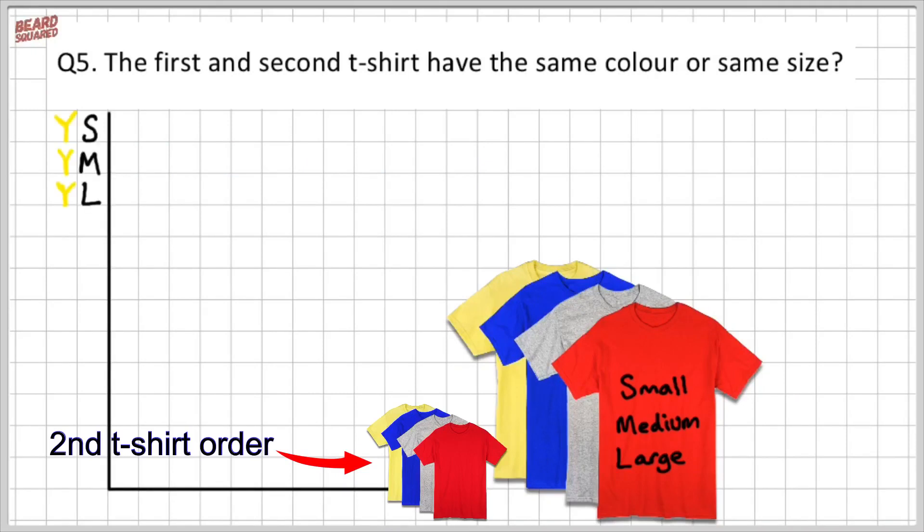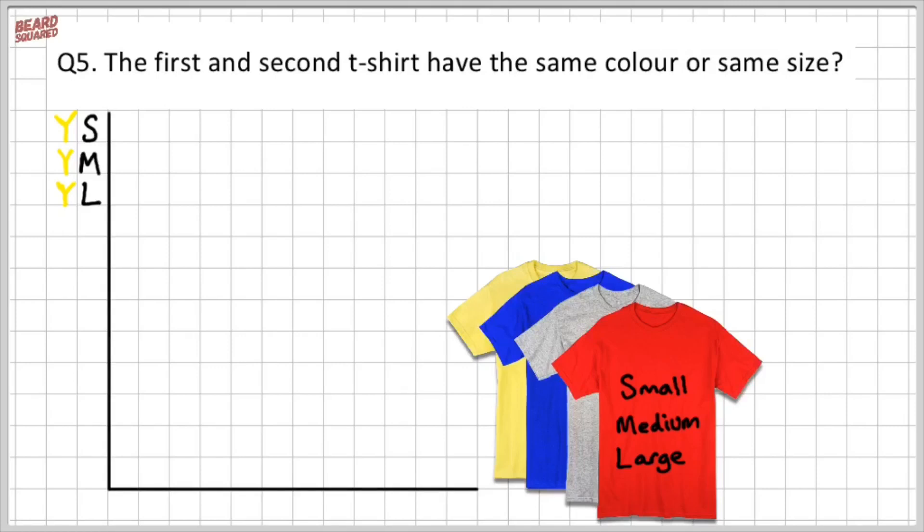Now from the previous video, we said that we're going to have yellow small, yellow medium, and yellow large. That's the outcomes for the yellow shirt. And then the same would be for the blue shirt, the same for the gray, and the same for the red shirts. And for t-shirt number two, I can have exactly the same outcomes: red large, red medium, red small, and then same with the gray, same with the blue, and same with the yellow.